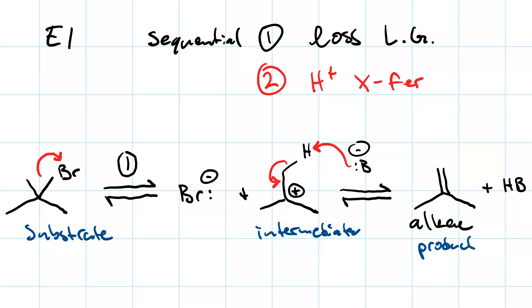We had an alkyl halide substrate, a carbocation intermediate, and an alkene product. The rate limiting step again is the formation of the carbocation. It's step one. It's unimolecular. Rate just equals the constant times the concentration of the substrate. That's why it's E1.